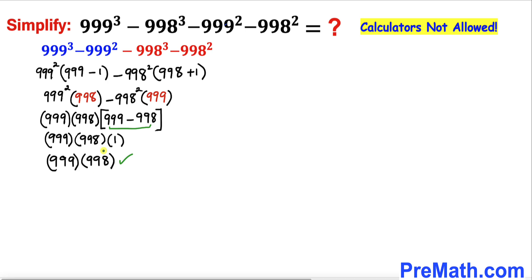Now we can see 999 - 998 is simply 1, so we end up with 999 times 998. Now let's tweak these numbers: 999 could be written as 1000 - 1, and likewise 998 could be written as 1000 - 2.